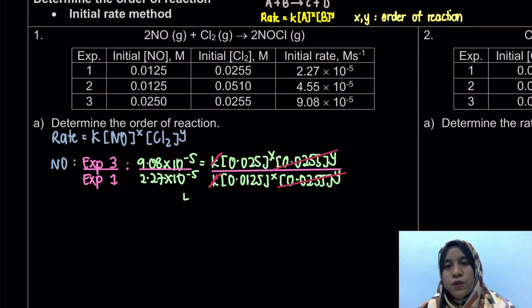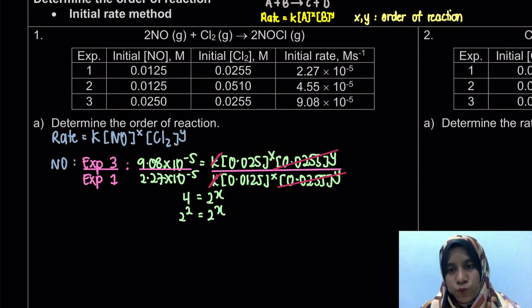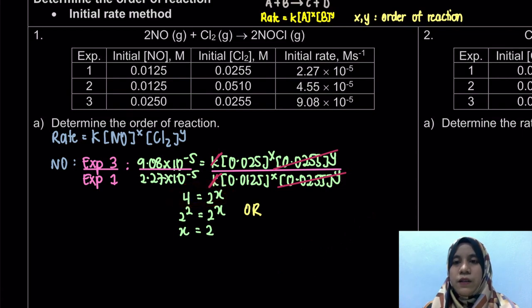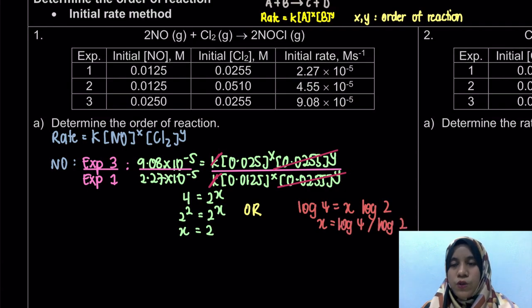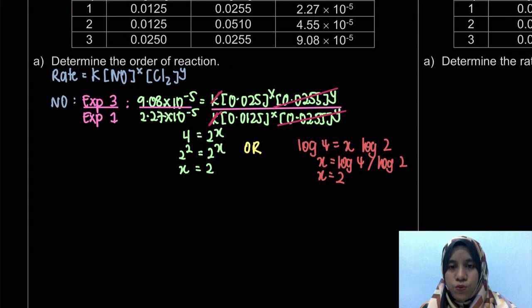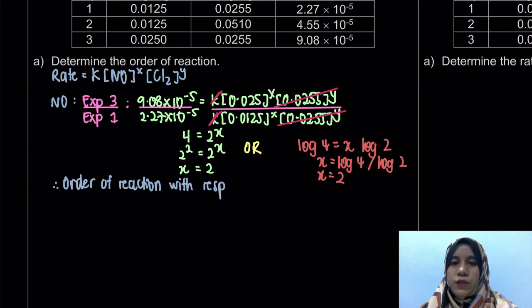So 4 is equal to 2 to the power of x. We know that x is equal to 2 - this is quite straightforward. But actually you can also use log for any value that is not as straightforward. So: 4 is equal to 2^x, then log 4 is equal to x log 2, hence x equals log 4 divided by log 2, and we get x equal to 2. Either way, we get the same answer. So we know that the order of reaction with respect to NO is 2. We have to write it down: the order of reaction of NO is 2.